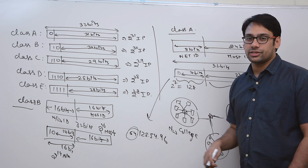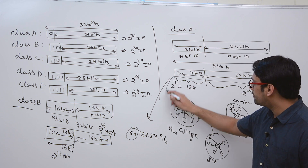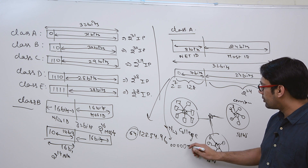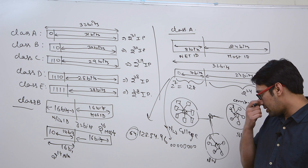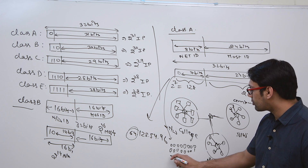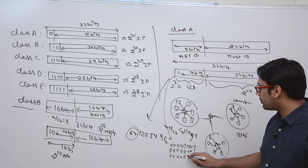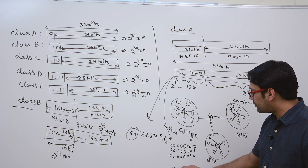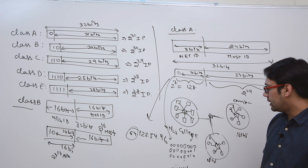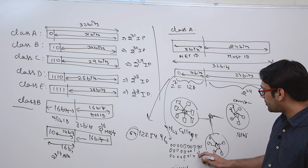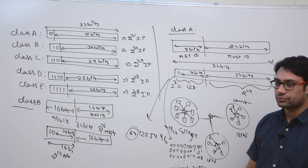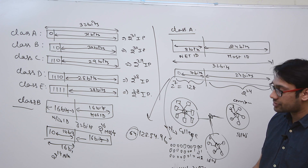With the first bit fixed as 0, the possible combinations for the first octet start from 0000 0000 representing 0, then 0000 0001 representing 1, 0000 0010 representing 2, and so on, up to the last number representing 127. That means the first octet in class A ranges from 0 to 127.